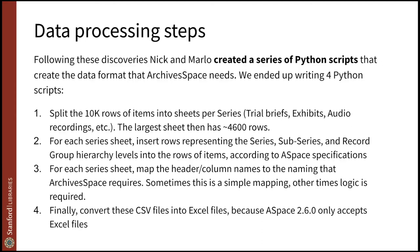Then in the next step, we insert the hierarchy into the sheet — the initial sheets just contain items with no information about hierarchy. The second script goes through each item and inserts them in the right place in the hierarchy. We have series, sub-series, and record groups. The highest level of hierarchy we have in this data is four levels deep, and oftentimes it's only three levels deep.